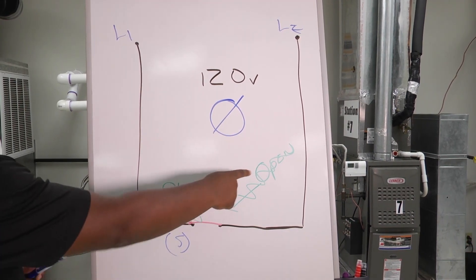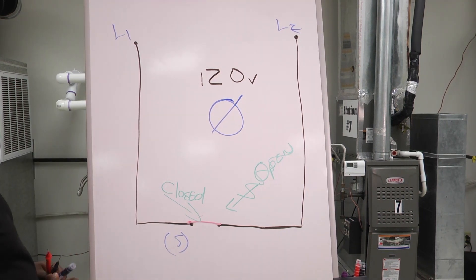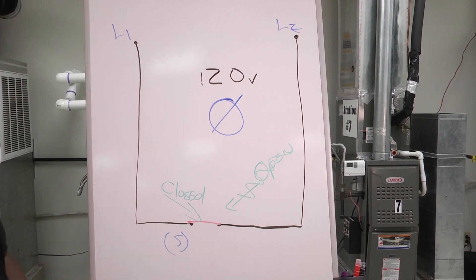So if it's open, I'm gonna read voltage 120. If it's closed, I'm gonna read zero on the screen of our meter.